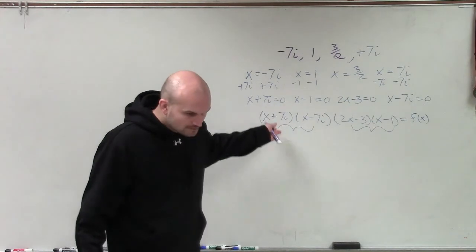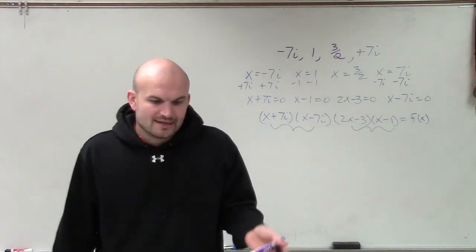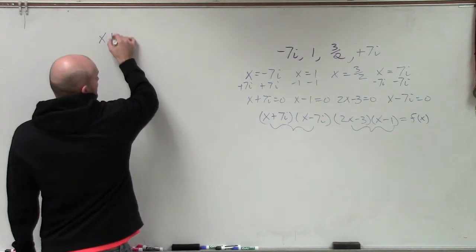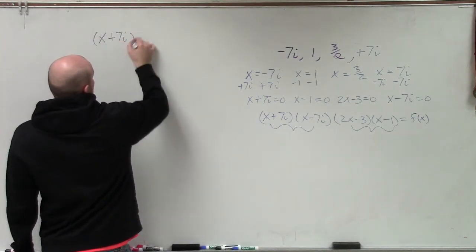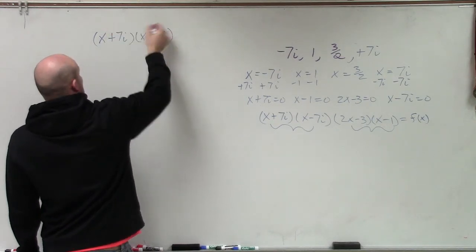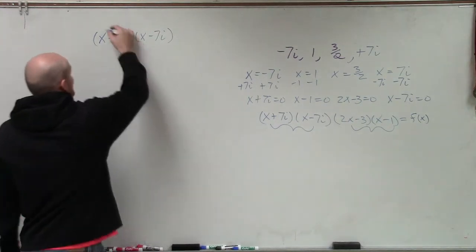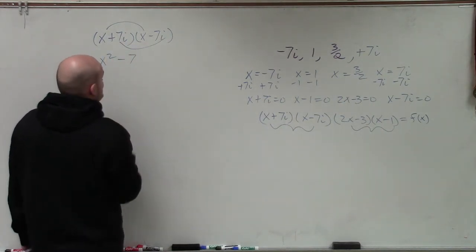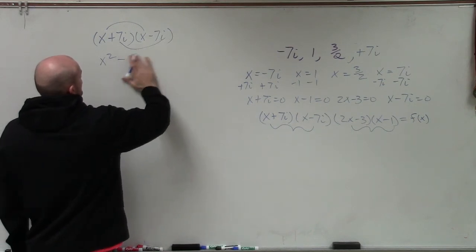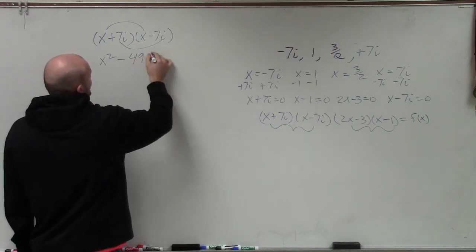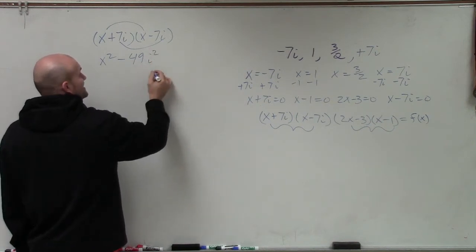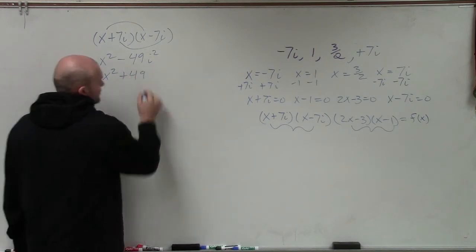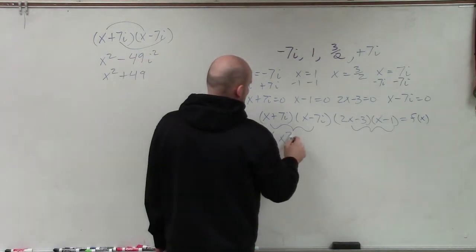Now, what's important about when you have a complex number and its conjugate, when you multiply them, that's going to produce the difference of two squares. Therefore, when I have x plus 7i times x minus 7i, again, you can multiply these all out by using FOIL. But again, if you just multiply your first two terms, what you get is x squared minus 49i squared. But remember, i squared we can rewrite as negative 1. Negative 1 times negative 49 is x squared plus 49. So therefore, this turns into x squared plus 49.